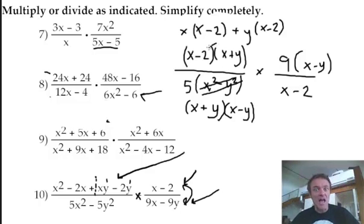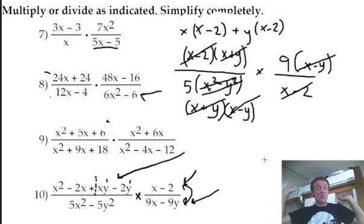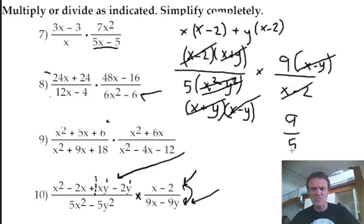Watch this. x minus 2 on top, x minus 2 on bottom. x plus y on top, x plus y on bottom. x minus y on top, x minus y on bottom. 9 over 5. There's always, I can't see what's left. That's it folks, 9 fifths. There you go. But remember that when you're dividing, flip the second one, then do all the factoring and cancel.